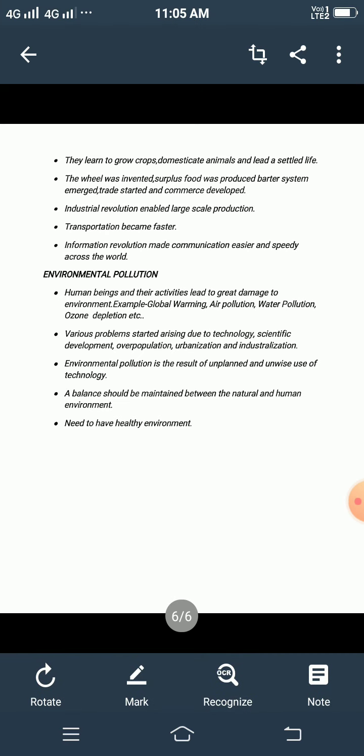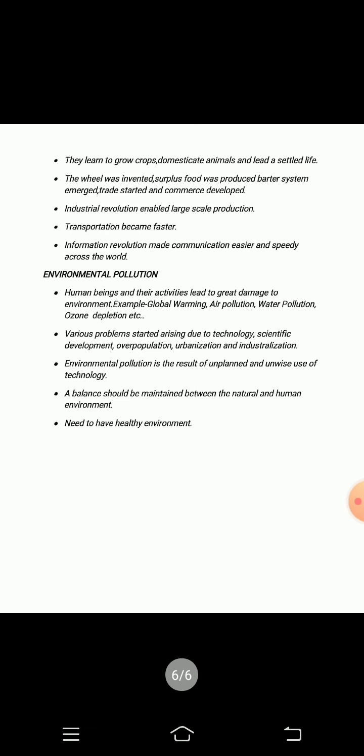The environment is slowly changing due to various human activities, and it is very harmful and adverse, creating an imbalance. Human beings are cutting down trees for settlements and agriculture, and slowly green lands and forests are being replaced by cities and towns. Human activities are not only affecting the environment but billions of other living organisms living in the environment.